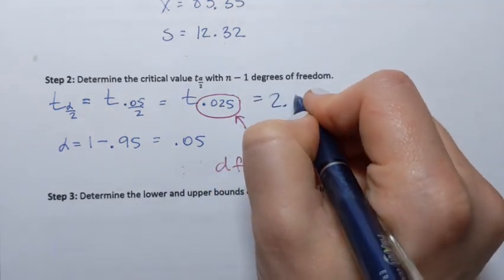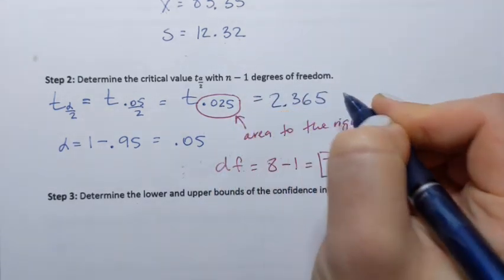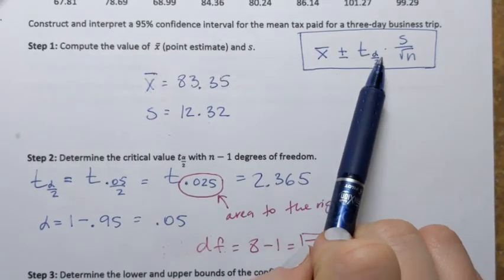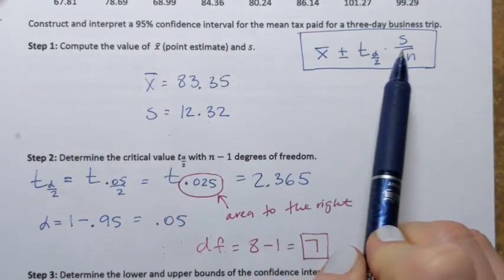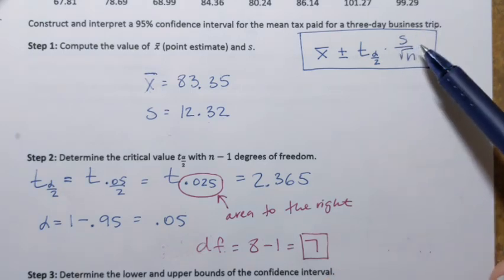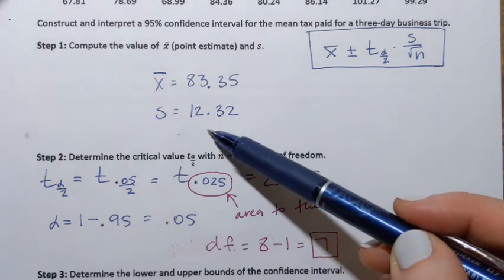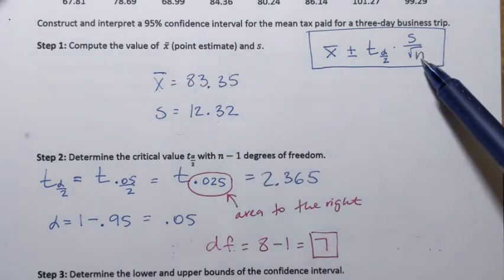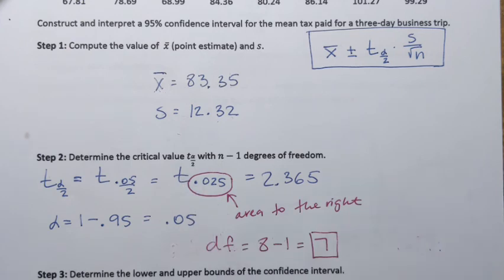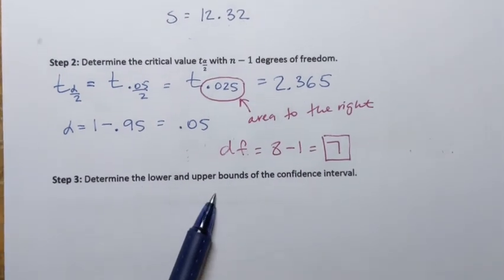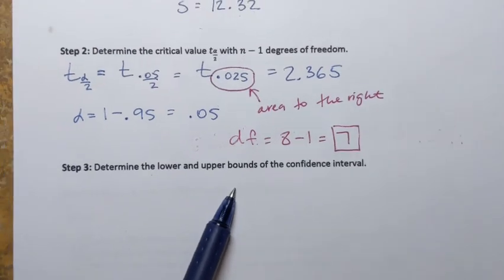The corresponding t value is 2.365. That critical value goes into the formula. The remaining pieces are already known: sample standard deviation s = 12.32, and sample size n = 8.